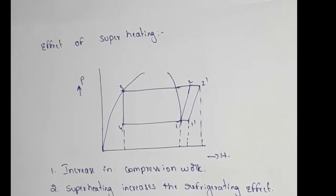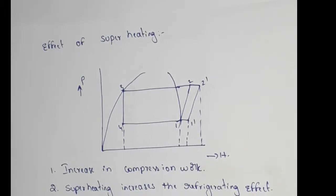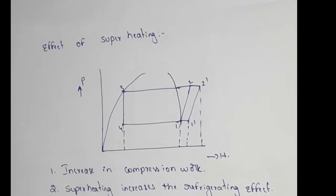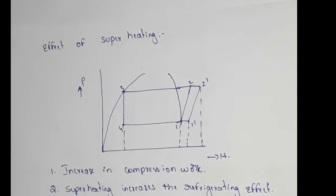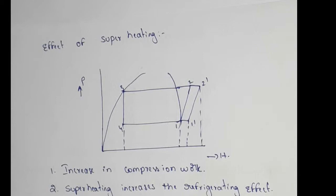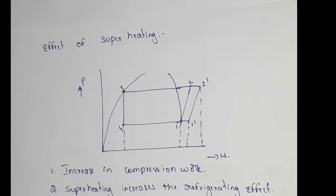The load on the condenser increases. As a result, the COP may increase, decrease, or remain the same. The COP behavior depends on the range of pressure of the cycle — it will not always go to the same value.